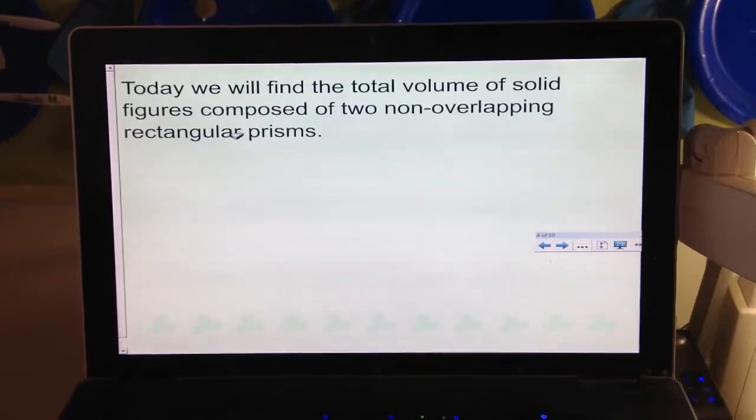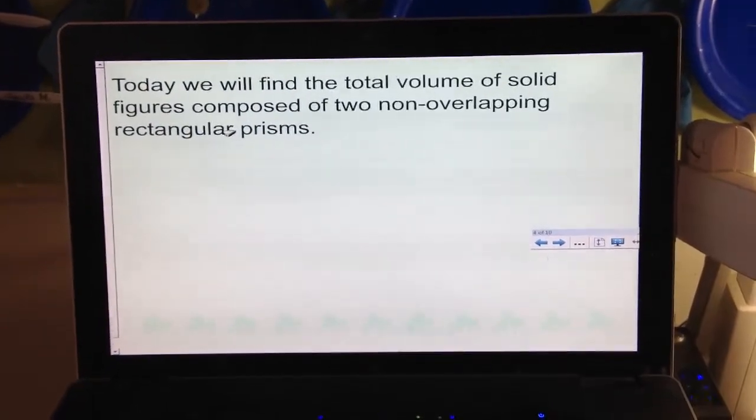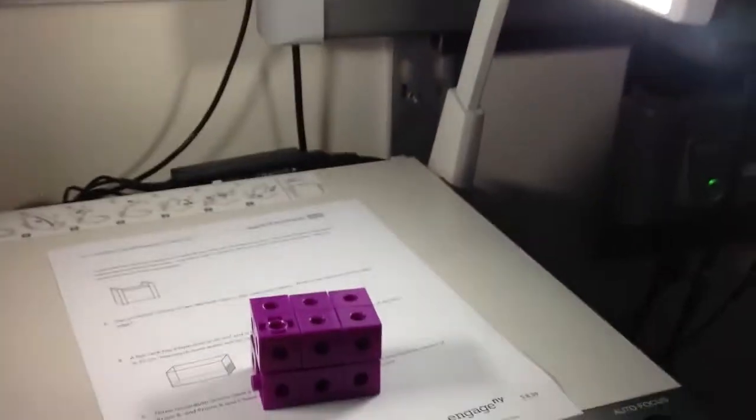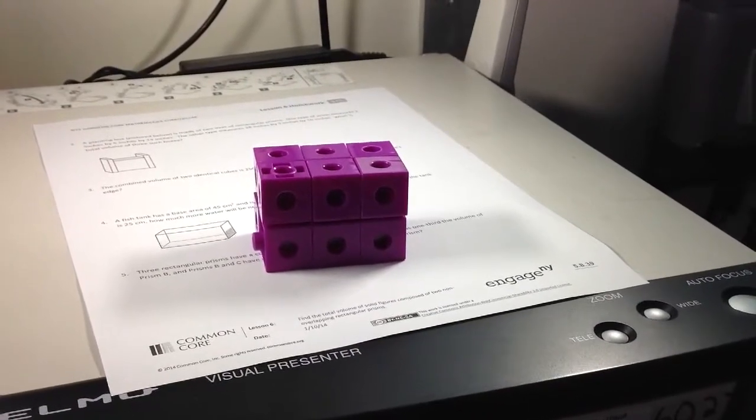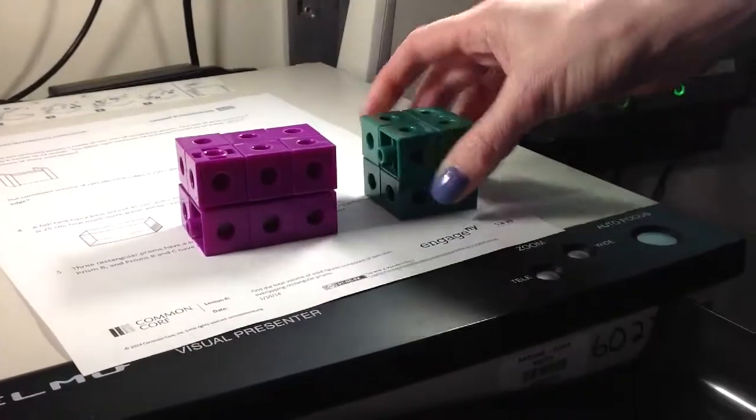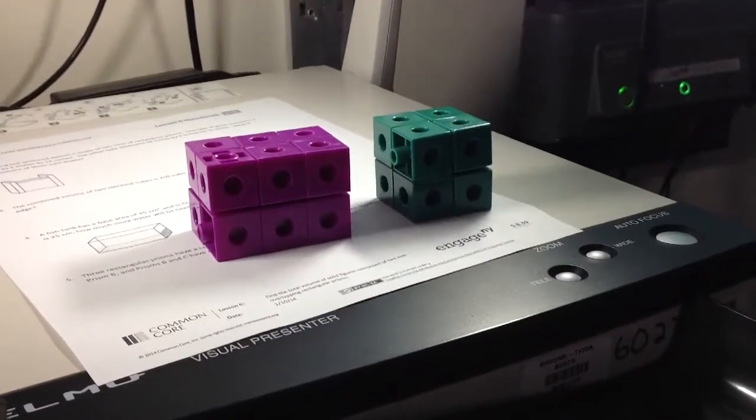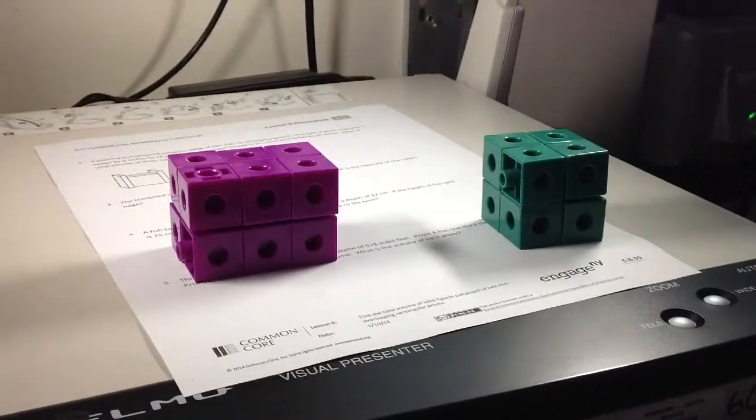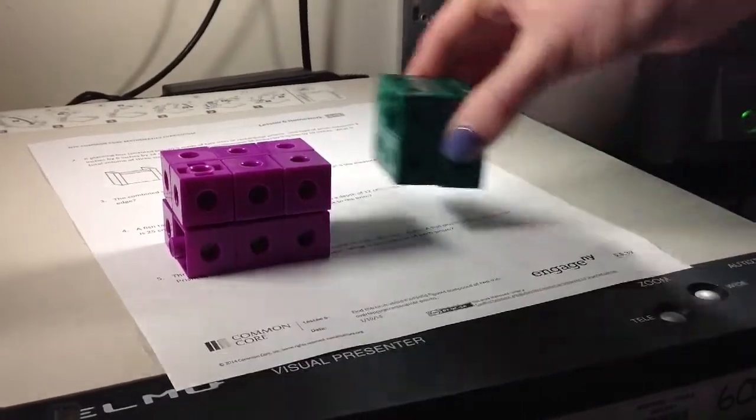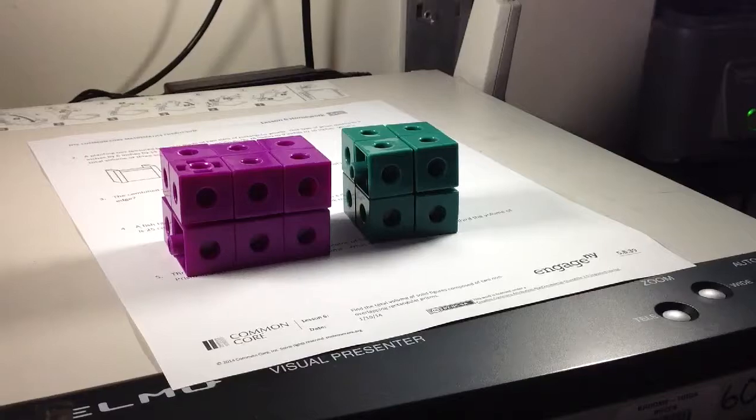The example that we used in class was we took a figure that was made three long, two high, and then two wide, and we made another figure that was two long, two high, and two wide. This one right here had a cubic unit of 12, and the green one had a cubic unit of eight.